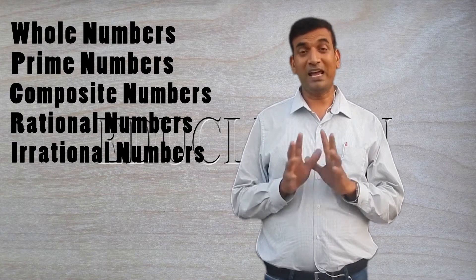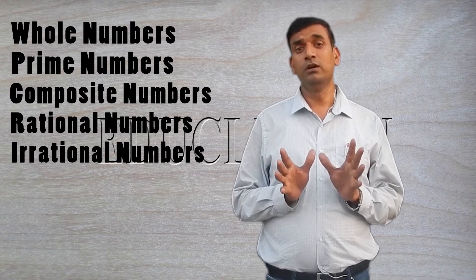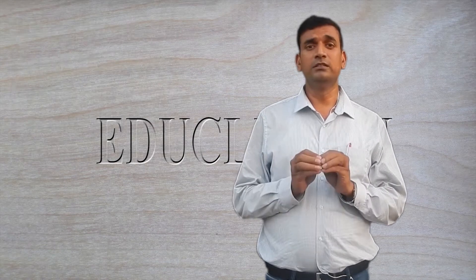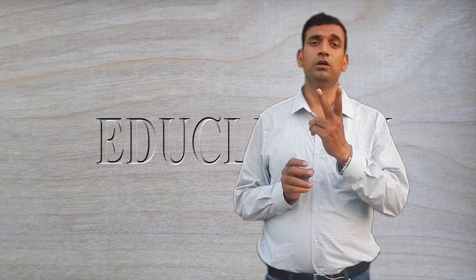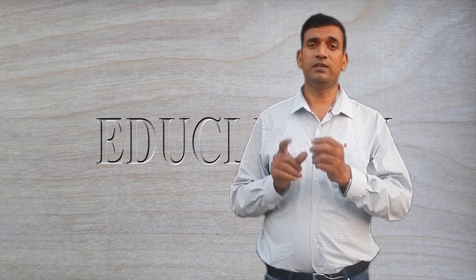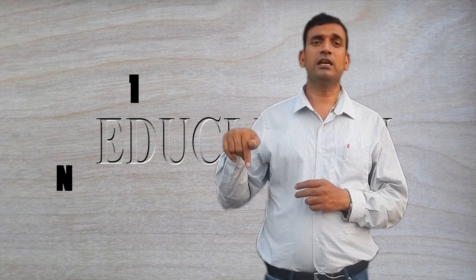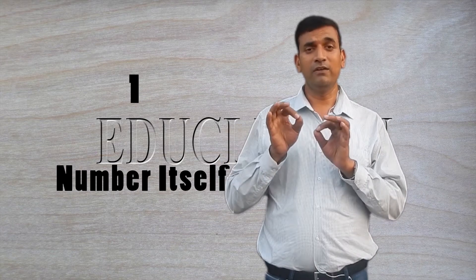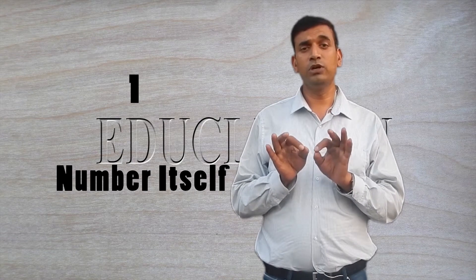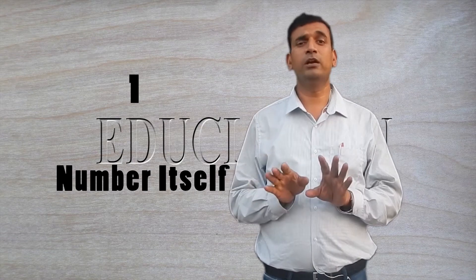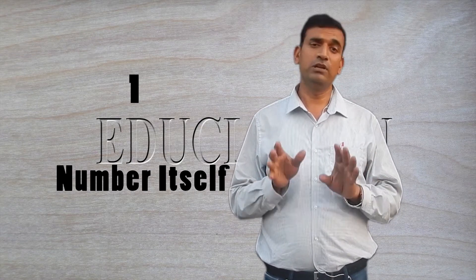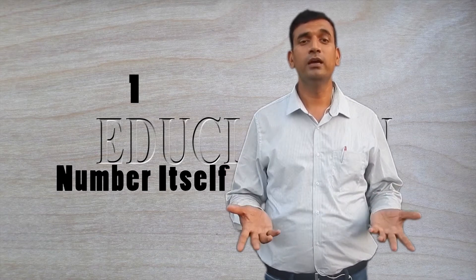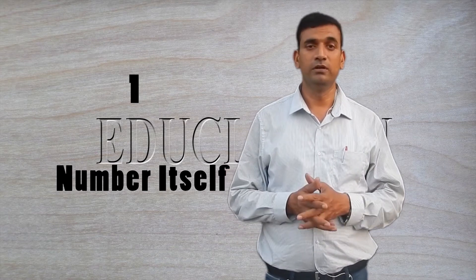A prime number is such a number where the number of factors is only two. The first one is one and the second one is the number itself. Every number, if it is only having two factors — that one is one and itself — then it is considered to be a prime number.